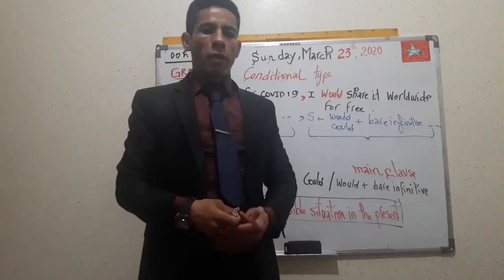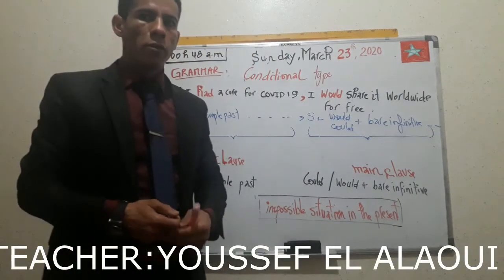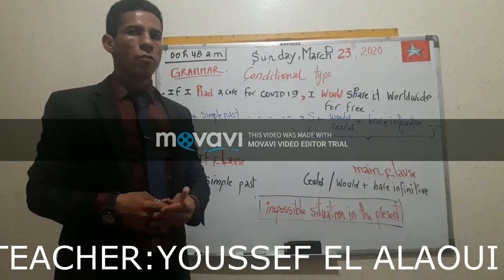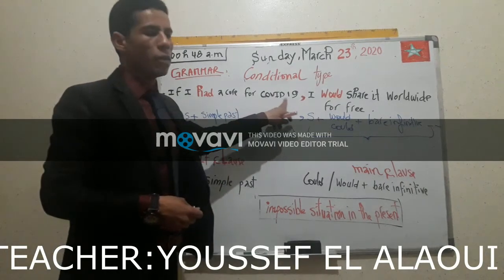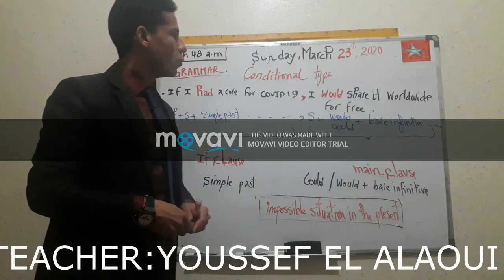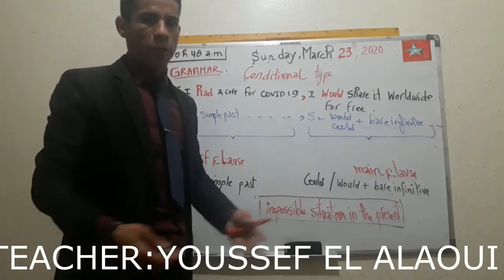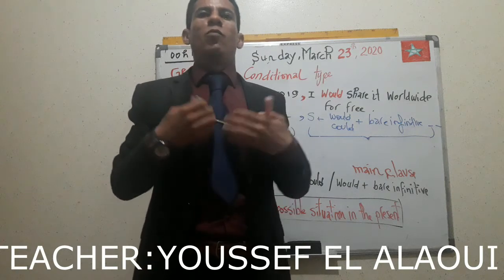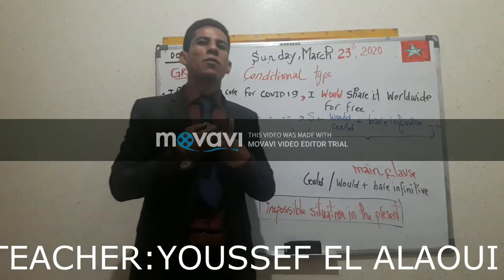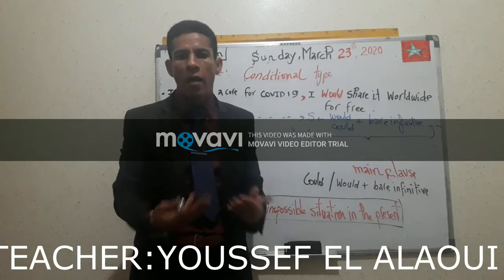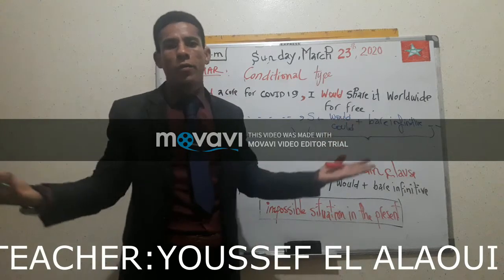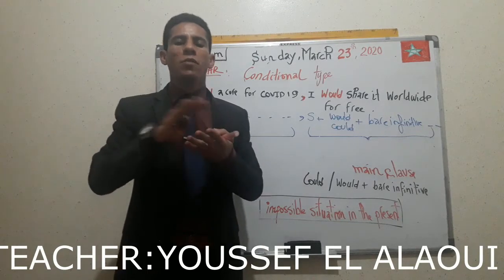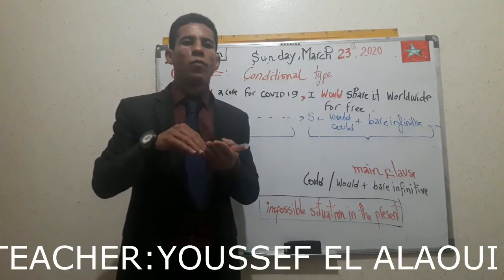Hi there, coming back again. Let's study the following examples as you see here. If I had a cure for COVID-19, I would share it worldwide for free. But unfortunately I don't have, so what I do now is just express my regret for not having that cure to give it to humanity. In other words, that situation is impossible to happen in the present at all.